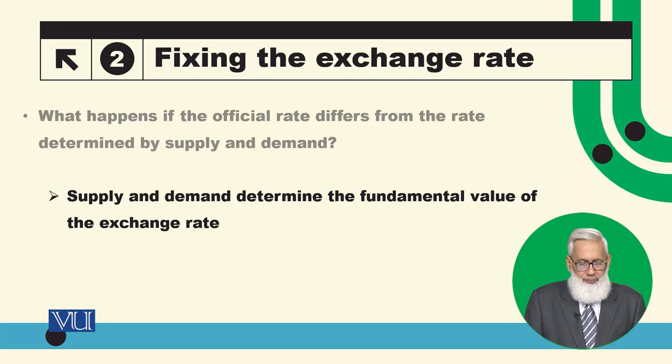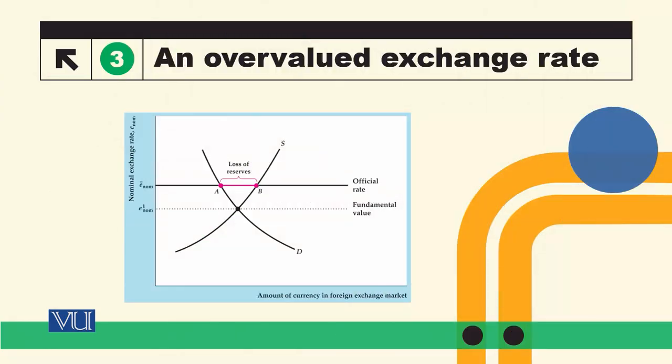If the official rate is different from the fundamental value of the exchange rate, what will happen? The fundamental value of the exchange rate is the nominal exchange rate determined by demand and supply. But if the official exchange rate is higher than this fundamental value, then the currency is said to be overvalued — the official rate is above the average market exchange rate.